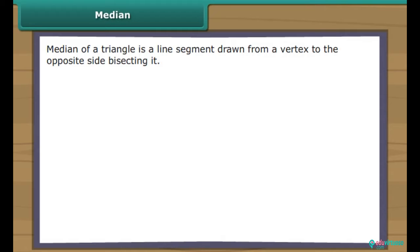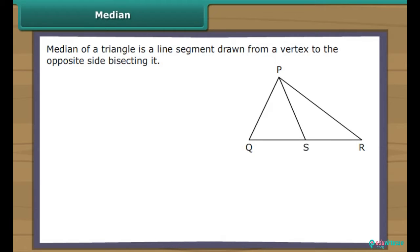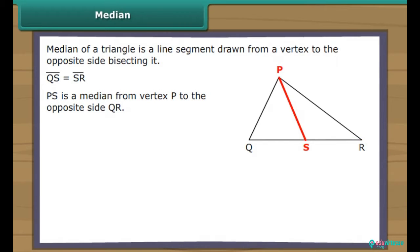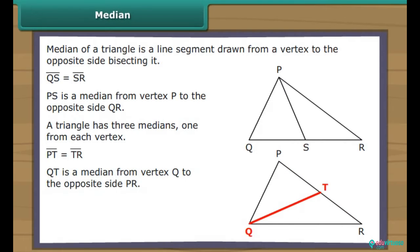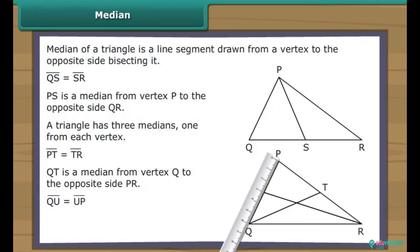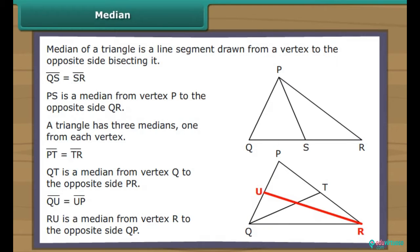Median of a triangle is a line segment drawn from a vertex to the opposite side. In the figure, line segment BS is drawn from vertex P to the opposite side QR. It divides QR into two equal halves. Therefore, BS is a median from vertex P to the opposite side QR. A triangle has three medians, one from each vertex. Line segment QT is a median from vertex Q to the opposite side PR, and RU is a median from vertex R to the opposite side QP.